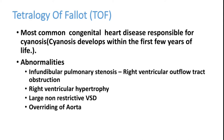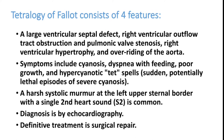There are four important abnormalities in Tetralogy of Fallot: infundibular pulmonary artery stenosis causing right ventricular outflow tract obstruction, right ventricular hypertrophy, a large VSD creating a connection between the right and left ventricles where pressures become equalized, and overriding of the aorta. These are the four important clinical findings in Tetralogy of Fallot.